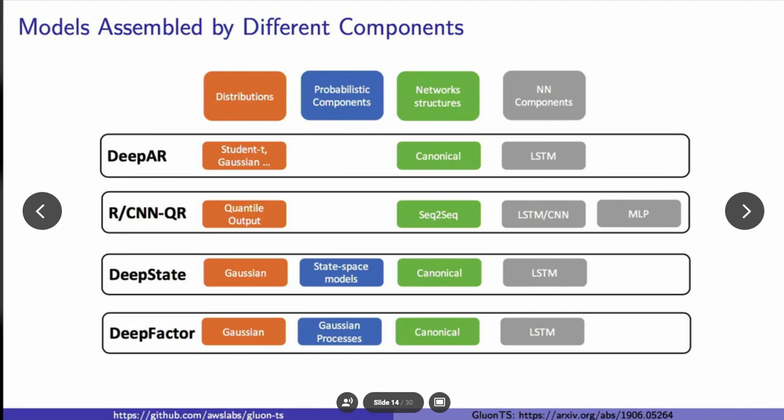Now let's talk about the models that are part of GluonTS and how they're assembled by the different components. One of the main ideas is we've built specific models for the user to use out of the box, but you can also use the given components to build your own models. For example, we can think of DeepAR as being a combination of using the distribution. You can define your own distribution, such as student's T or Gaussian or negative binomial combined with the canonical network. MQ-CNN-RNN is based off of MQRNN, and that's composed of the quantile output distribution and sequence-to-sequence.